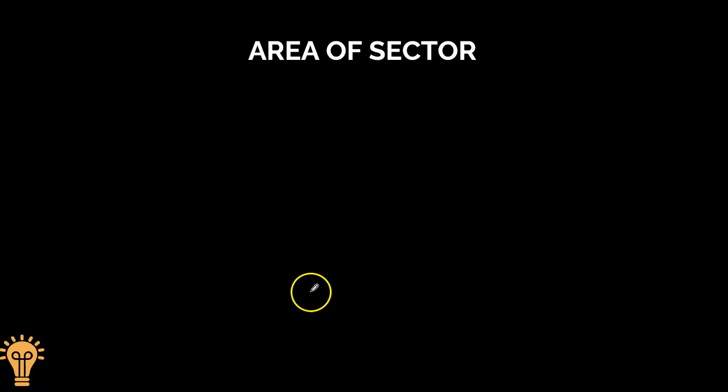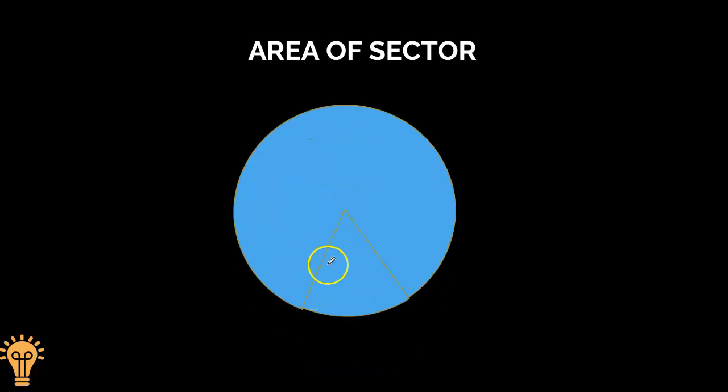Hi, welcome to the next topic: area of sector. Here O is the center of the circle. OA and OB are the radii of the circle. The portion in between or enclosed by two radii and the corresponding arc...